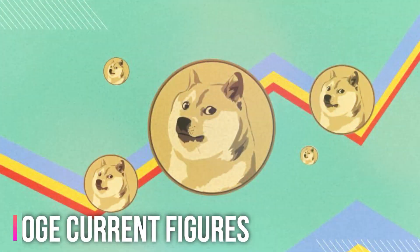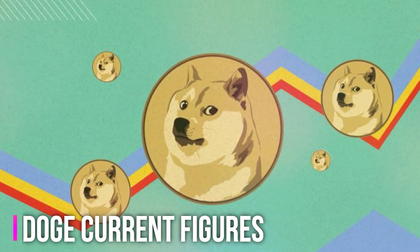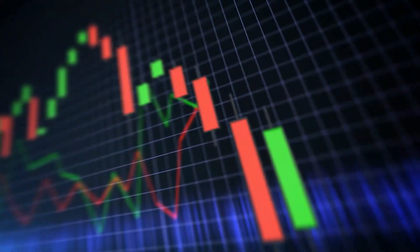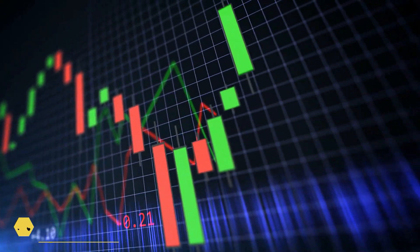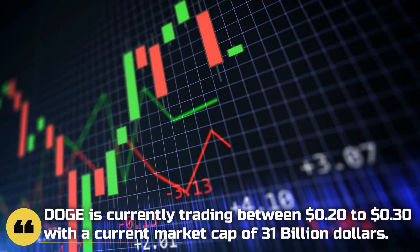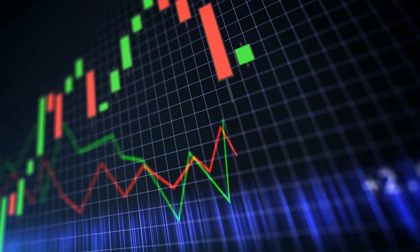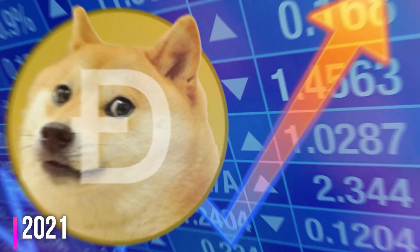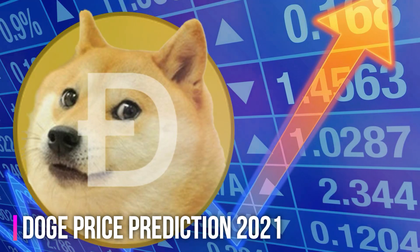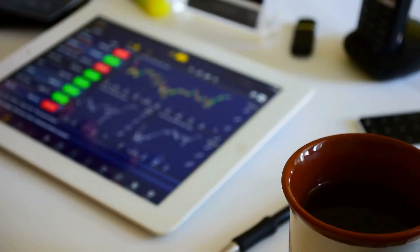Such use cases will bring utility to the coin, hence the demand for Doge increases, that will lead to the price inflation of Doge. Doge current figures: Doge is currently trading between 0.20 to 0.30 dollars with a current market cap of 31 billion dollars. The current market rank of Doge is number six with the current market dominance of 2.20%.